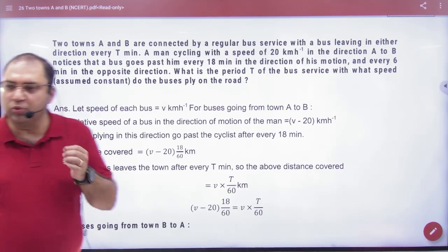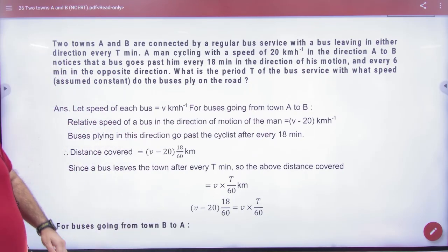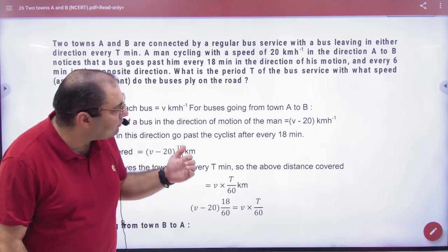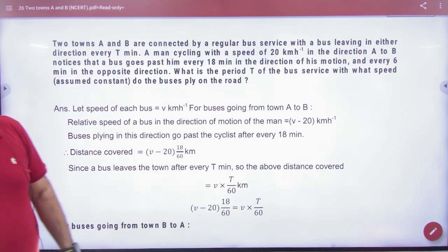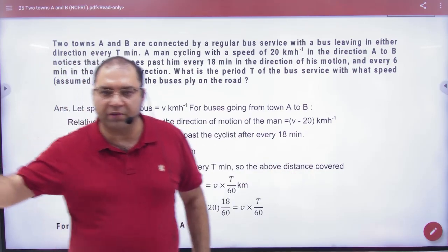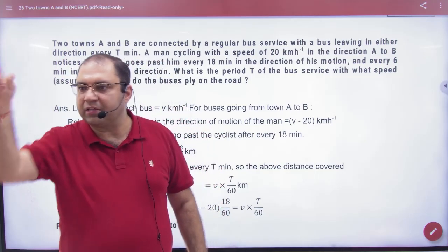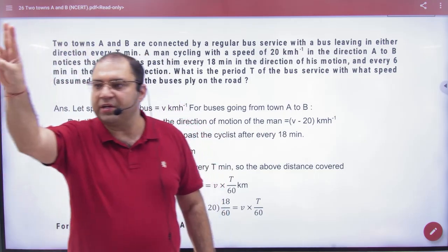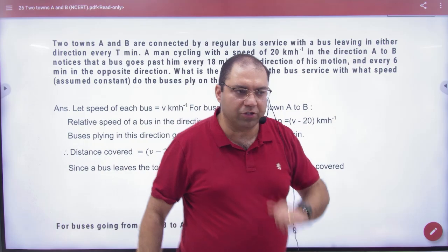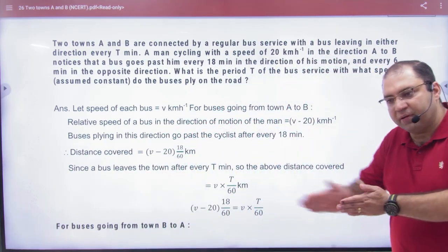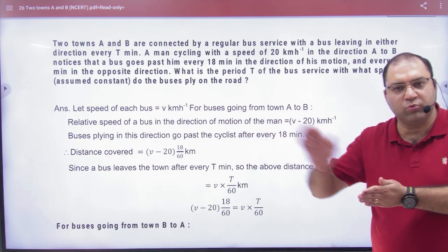There are two towns, A and B, connected by a regular bus service with a bus leaving in either direction every capital T minutes. The department runs buses from both towns — one bus leaves, then after T minutes the next one, and so on throughout the day. The same schedule runs from town B as well.